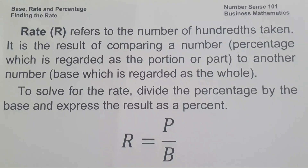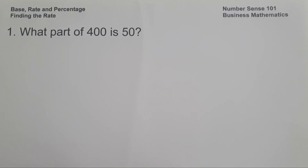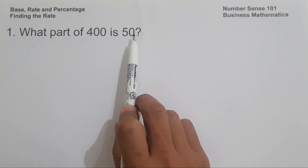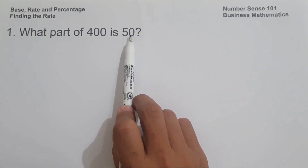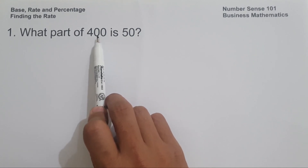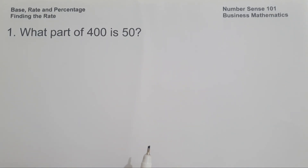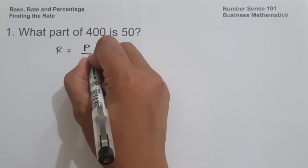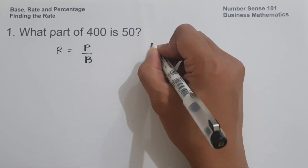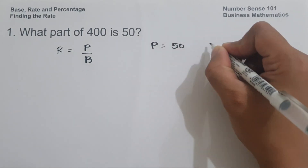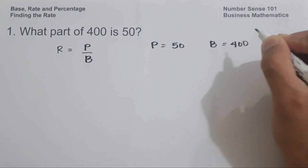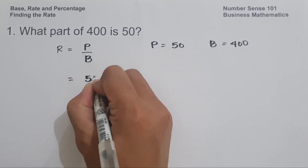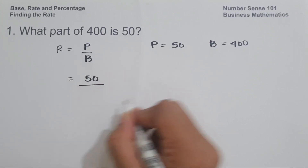Let's start with example number 1: What part of 400 is 50? Since we are comparing two numbers — 50 and 400 — 50 is the part or portion, and 400 is the base or the whole. To solve the given problem, let us use the formula: rate equals percentage divided by base. So percentage is 50, and base is 400.